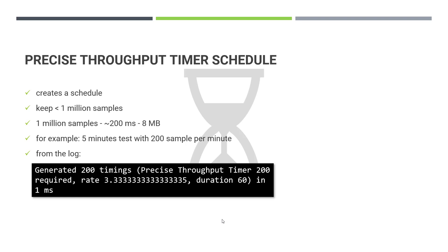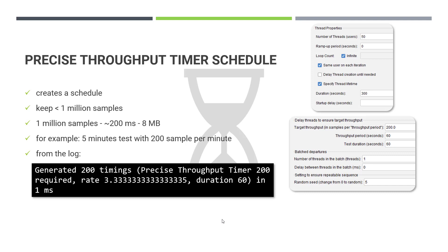For example, with a thread group of 50 threads, ramp-up period of 0, loop count infinite, and a test duration of 300 seconds, and the Precise Throughput Timer configured with a target throughput of 200 — so 200 per throughput period of 60 seconds, meaning 200 samples per minute. The test duration here is 60, which is where the schedule is created by JMeter. When you start the test, first it generates 200 timings in one millisecond, with a rate of 3.33 and a duration of 60 seconds.